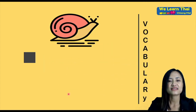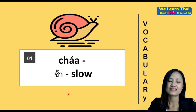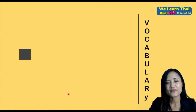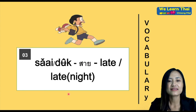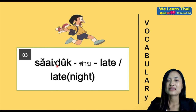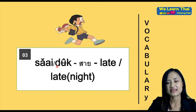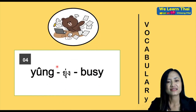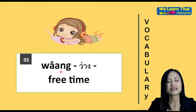Now vocabularies. 'ช้า' means slow, 'เร็ว' means fast or early. 'สาย' or 'ดึก' means late — 'สาย' means late, and 'ดึก' means late night. 'ยุ่ง' means busy, and 'ว่าง' means free.